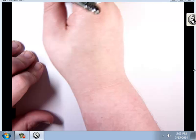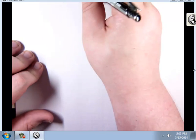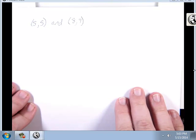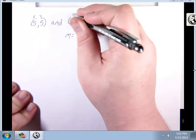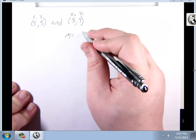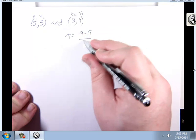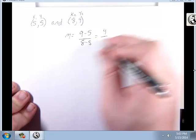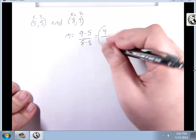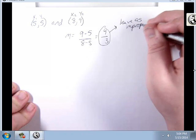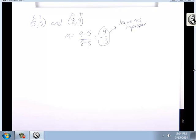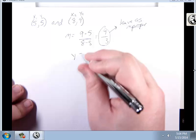I'm going to do a couple more examples. Here are the two points: (5, 5) and (8, 9). First, I'm going to find m. x1, y1 and x2, y2. That gives 9 minus 5 over 8 minus 5. 9 minus 5 is 4, 8 minus 5 is 3. I'm going to leave that as the improper fraction 4/3 — it'll make the math easier. So this is my line: y equals 4/3 x plus b.